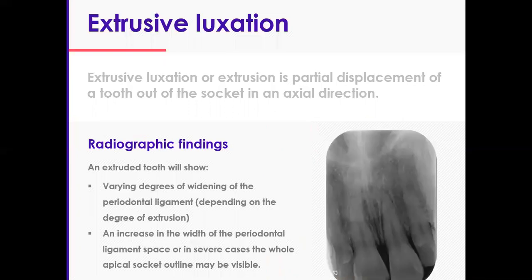Radiographically, you should be able to detect PDL widening. If you look at this radiograph, you can see the PDL widening across the tooth, and it really depends on the degree of extrusion. The more extruded the tooth is, the more of the PDL and socket you can see, and in severe cases you can actually see the entire outline of the socket.